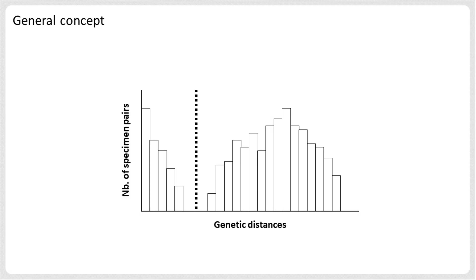ABGD is based on the idea that in a pairwise distribution of genetic distances calculated between DNA sequences, representing both intraspecific and interspecific variability, there will be a so-called barcode gap that separates the intraspecific distances from the interspecific distances. In the graph shown here, the DNA barcode gap is represented by the dashed vertical line. In the process of species delimitation, this barcode gap can be used as a threshold. Two individuals whose sequence distance is below the DNA barcoding gap threshold will be considered as belonging to the same species, and two individuals with distances above the threshold will be considered to belong to different species.